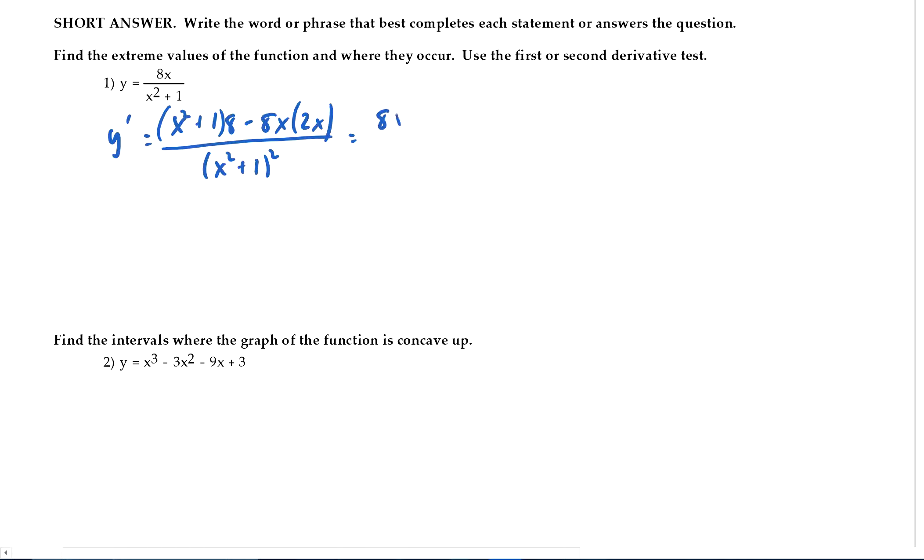And then simplifying, we get 8x squared plus 8 minus 16x squared all over x squared plus 1 squared, which is 8 minus 8x squared all over x squared plus 1 squared. And we want to know when is that zero or undefined. And notice this is never undefined because x squared is always positive.